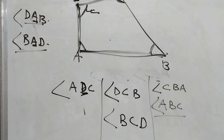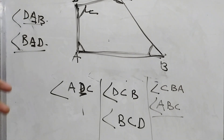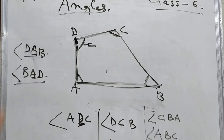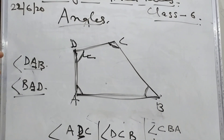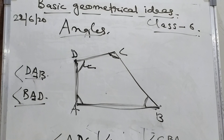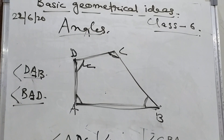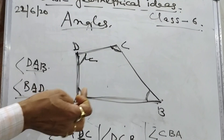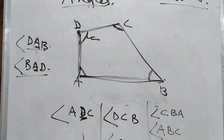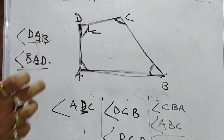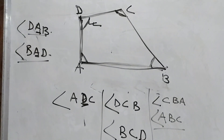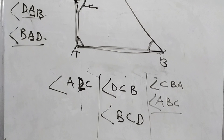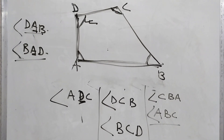Whenever a figure like this comes, this is the perfect method to name the angle. We can simply write angle B, angle C, angle D, or angle A. But actually, using the three-letter method is the proper method to name the angle. Hope students, you have understood this. Now let me go to one more example.